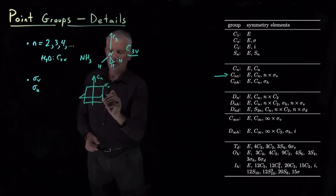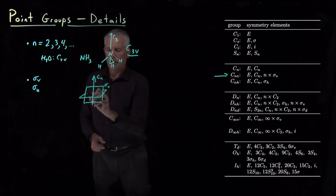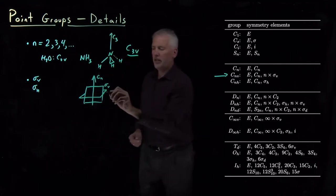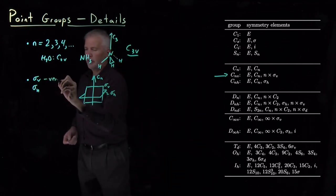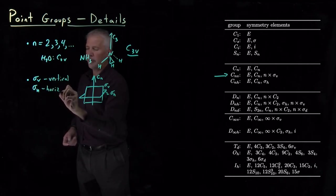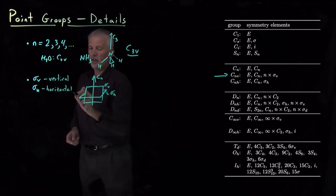On the other hand, if there's a horizontal reflection plane, we call that a sigma H. Here vertical and horizontal mean with respect to this CN axis.